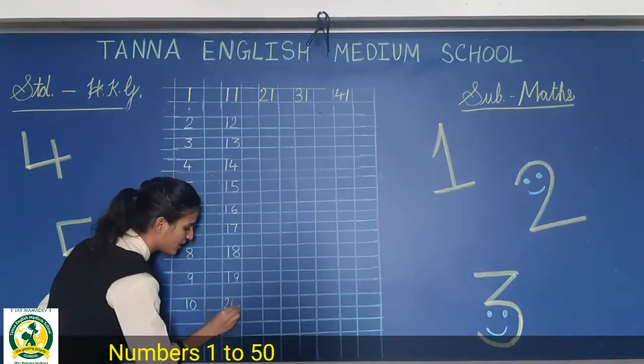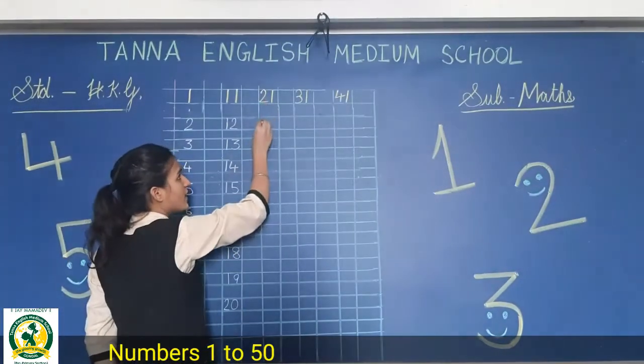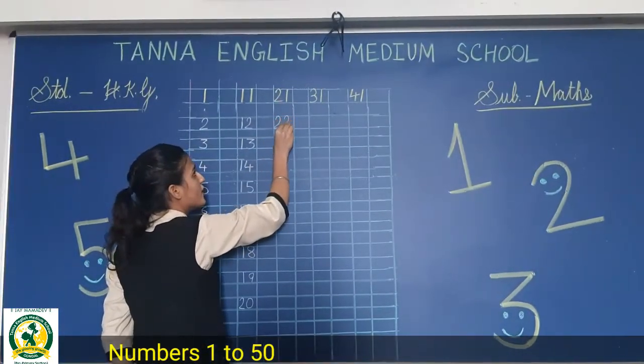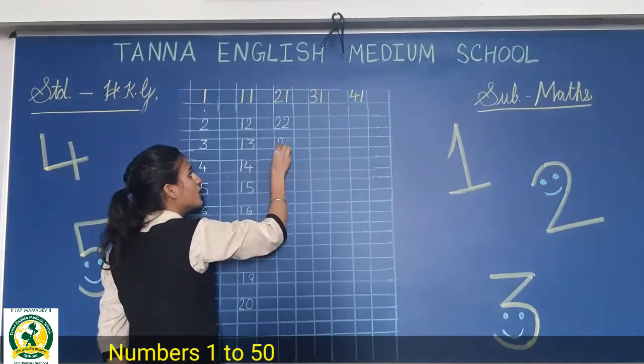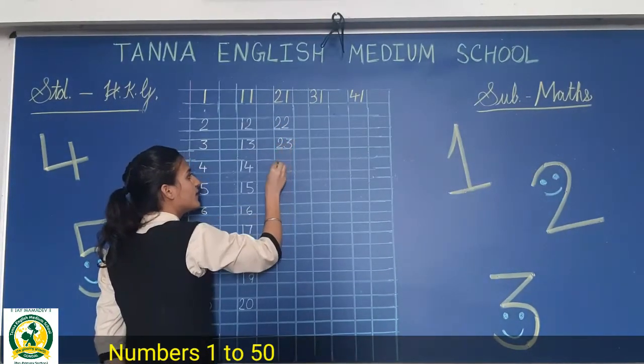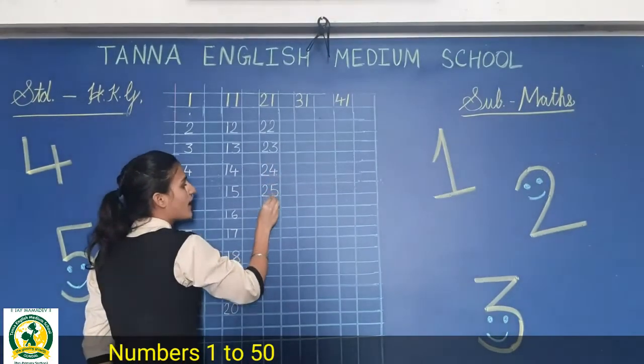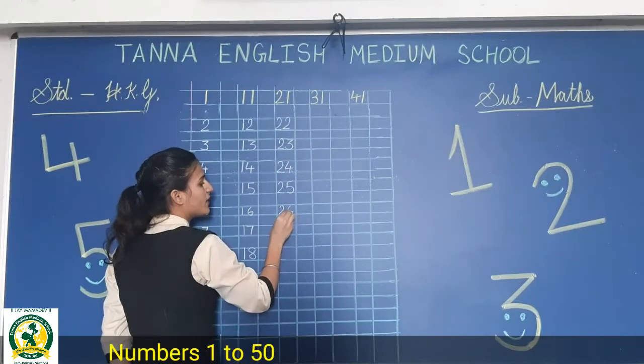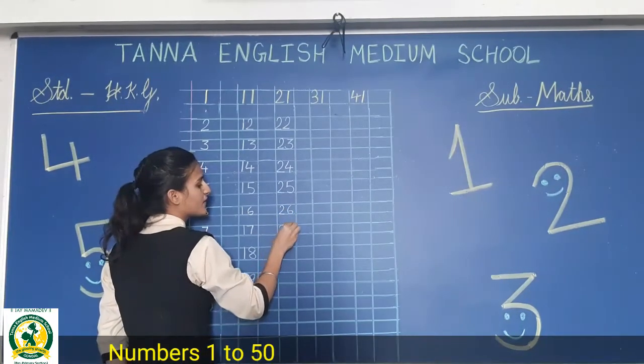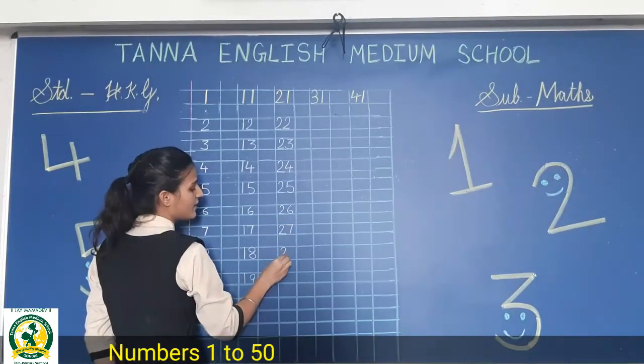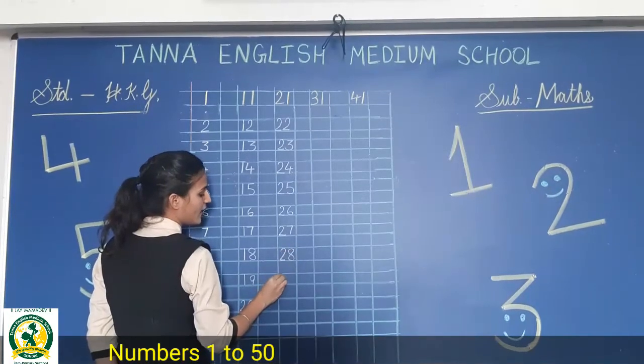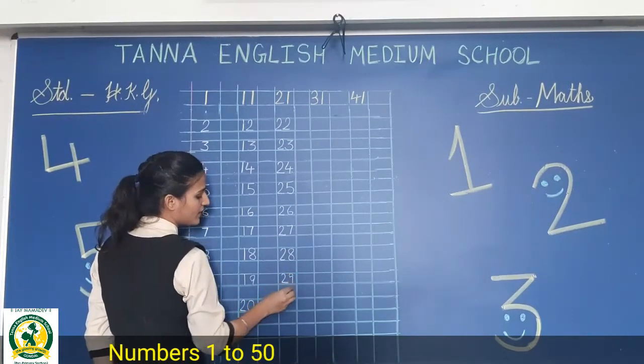2, 0, 20. Then 21, 22, 23, 24, 25, 26, 27, 28, 29.